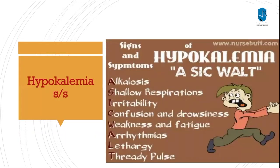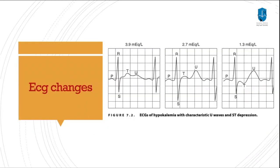This is a summary of the signs and symptoms of hypokalemia: alkalosis, shallow respiration, irritability, confusion and drowsiness, weakness and fatigue, arrhythmia, lethargy, and abnormal pulse. The ECG changes seen in hypokalemia: at a level of 3.9 we will see a rising U wave. As the level decreases further, the U wave becomes more predominant and we can also see associated ST depression.